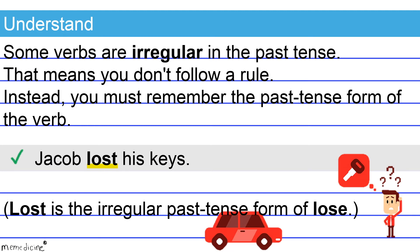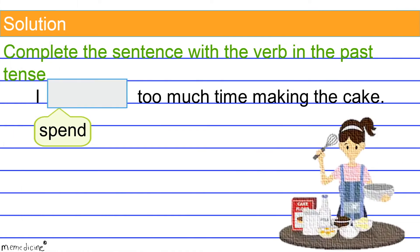All right, back to our original question and now for the solution. 'Spent' is the simple past tense verb form of 'spend.' This is an irregular verb form, so you must commit it to memory.